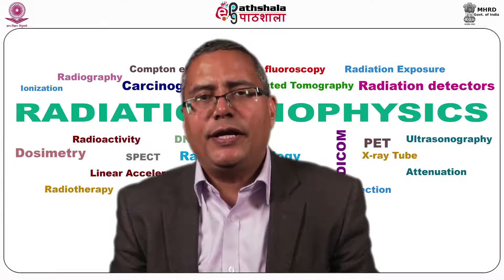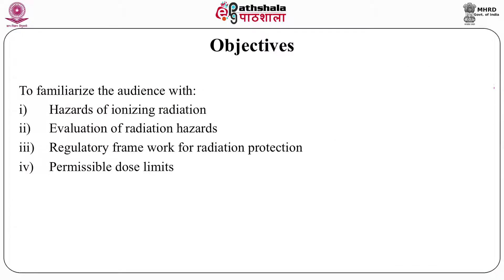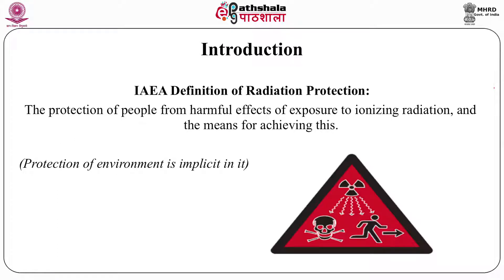To reframe our objectives: in this module the audience will be familiarized with hazards of ionizing radiation, how to evaluate radiation hazards, the regulatory framework, and permissible limits. The International Atomic Energy Agency defines radiation protection as the protection of people from harmful effects of exposure to ionizing radiation and the means for achieving this — implicitly including not only protection of human beings but also protection of the environment.